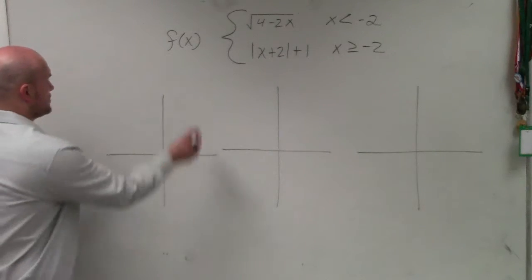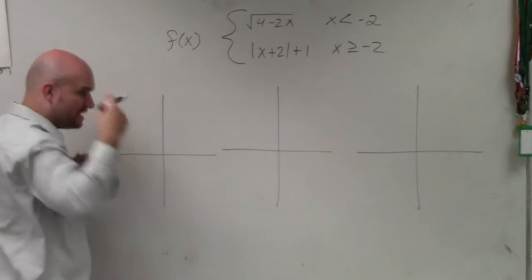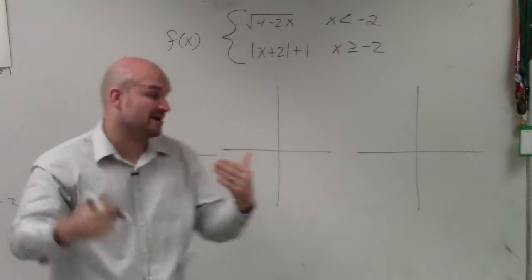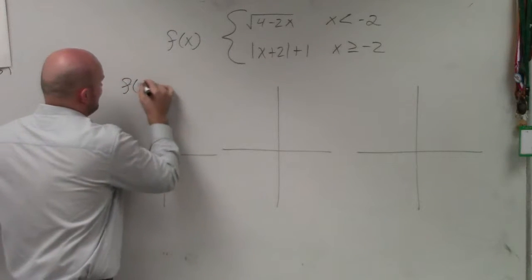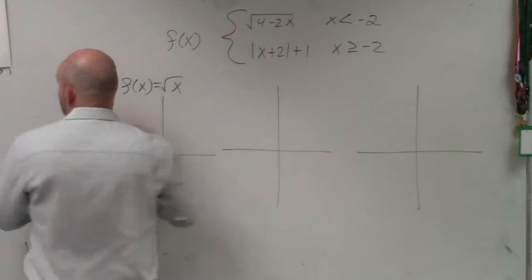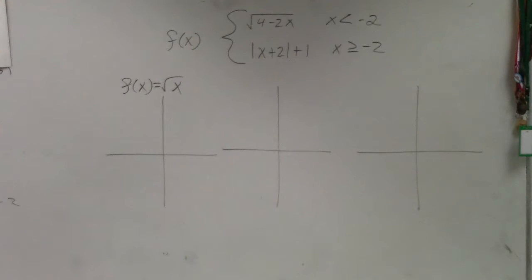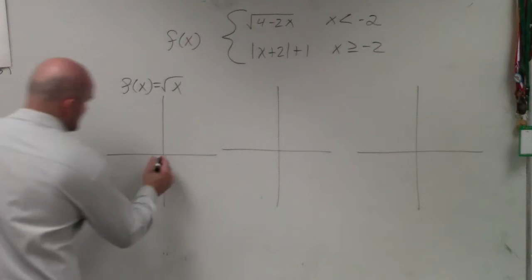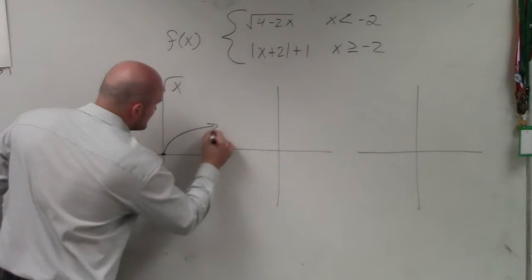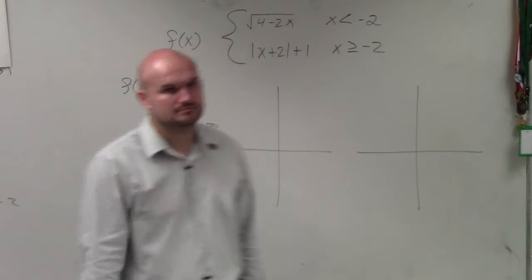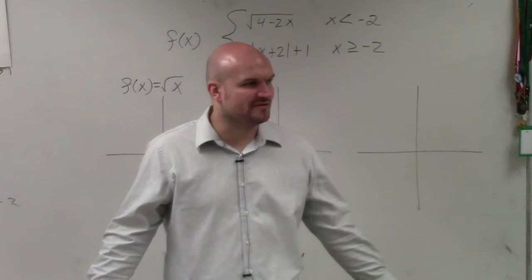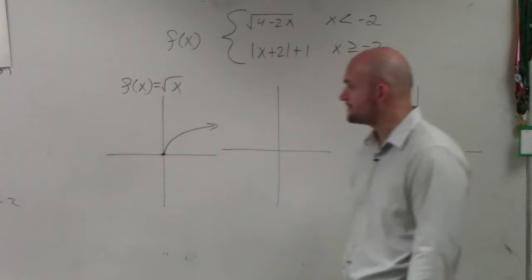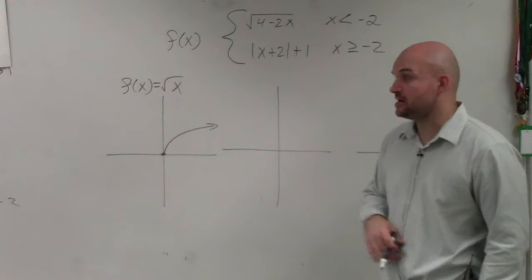Let's take a look at our first function. We need to understand what the parent graph is. The parent graph of this is f(x) = √x, which is your square root function, which is all the way over here. Does everybody agree that's the square root function? So I know what the parent graph looks like. It looks something like that. It doesn't have to be perfect, but that's what the square root function looks like. Now, we need to understand what the transformations are.